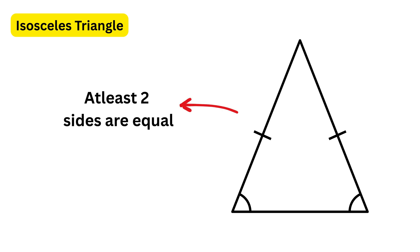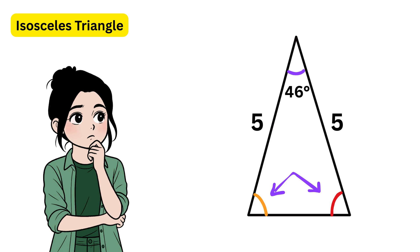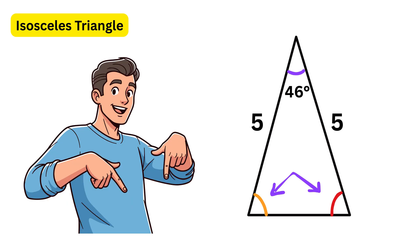An isosceles triangle has two sides that are equal, and the angles opposite those equal sides are also equal to each other. Here's a question: if two sides of a triangle are each 5 units and one angle is 46 degrees, what will be the value of the two equal interior angles? Let me know your answer in the comments.